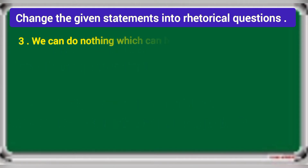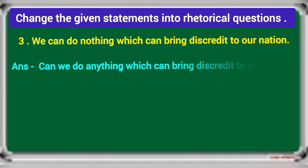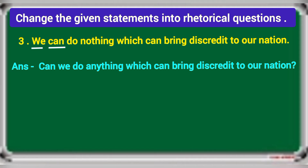Third: we can do nothing which can bring discredit to our nation. The rhetorical question is: can we do anything which can bring discredit to our nation? Focus on 'we can do nothing' — change the places of subject and verb. Start with the helping verb 'can'. The statement is negative because of 'nothing', so make the rhetorical question positive. When 'nothing' is in the statement, use 'anything' in the rhetorical question.